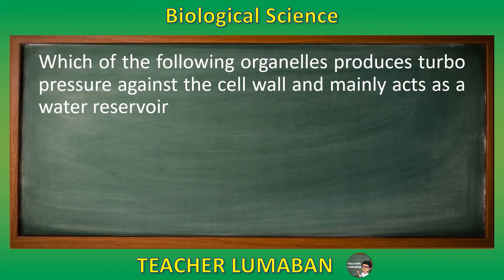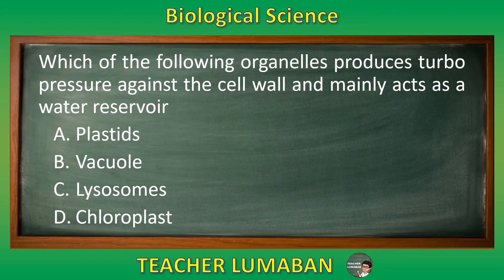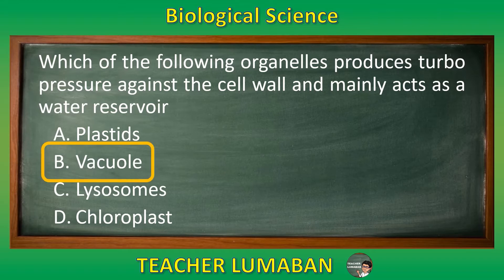Which of the following organelles produces turgor pressure against the cell wall and mainly acts as a water reservoir? Letter A: plastids. Letter B: vacuole. Letter C: lysosomes. Letter D: chloroplast. Choose the suitable answer based on the given choices in 5 seconds. 5, 4, 3, 2, 1. The correct answer is Letter B, vacuole. The vacuole organelle produces turgor pressure against the cell wall and mainly acts as a water reservoir.